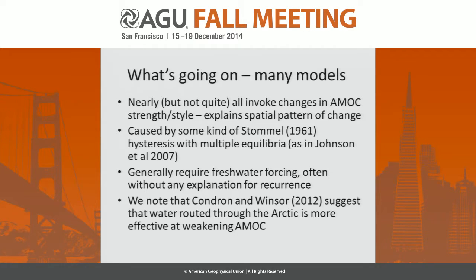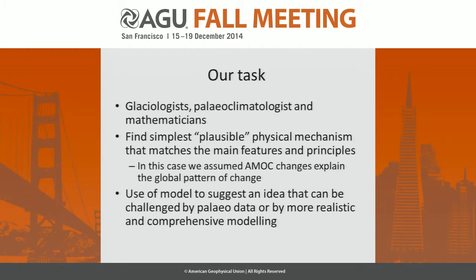At the time we were working on this, we were struck by the Condon and Windsor paper, which uses much higher resolution oceanographic models than generally used. It suggested that only if you route water through the Arctic do you really succeed in weakening AMOC — not just by putting freshwater across the North Atlantic as traditional hosing experiments do.